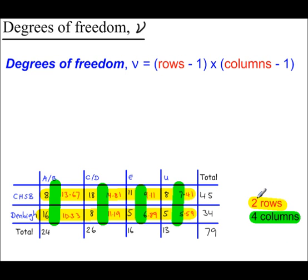Subtract one from each of these numbers. So, the number of rows is two. So, you do this. Two minus one. The number of columns is four. So, subtract one from that. You do four minus one. You're multiplying these. Two minus one is one. Four minus one is three. So, we have three degrees of freedom.